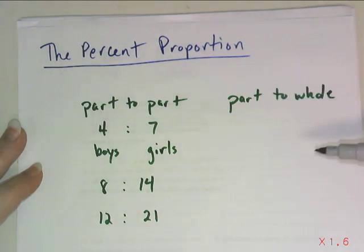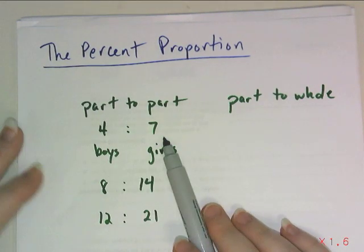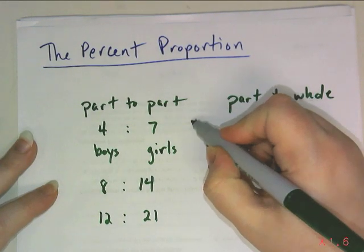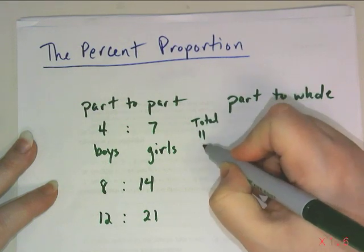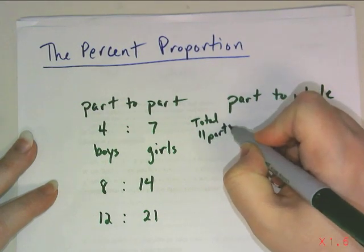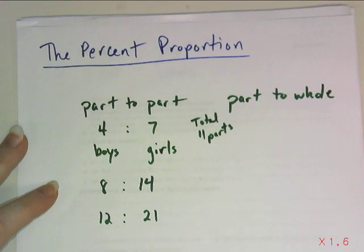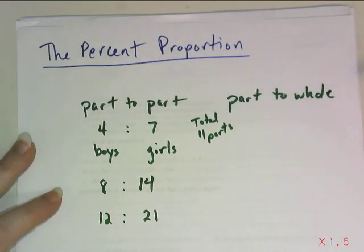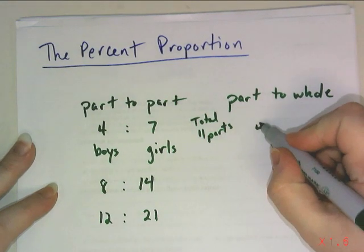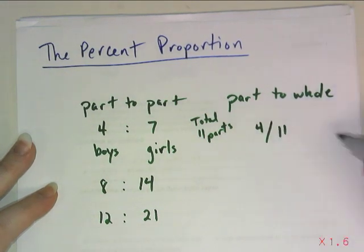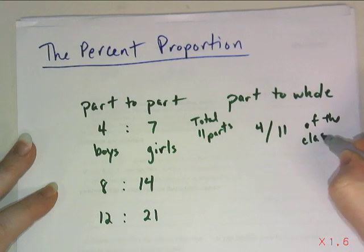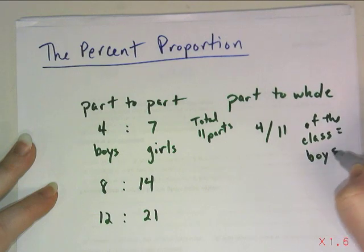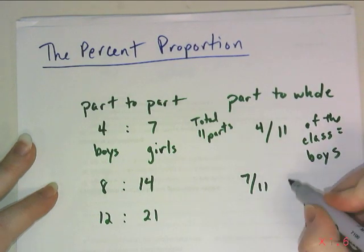Because we can reduce ratios just like we can fractions. Now, if we wanted to then change it to a part-to-whole ratio, if there are four boys to seven girls, we add those up, and that gives us a total of 11 parts. So, even without knowing exactly how big our original class size is, I can still use these reduced values to create part-to-whole ratios. There are four elevenths of the class as boys, and seven elevenths of the class as girls.